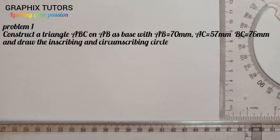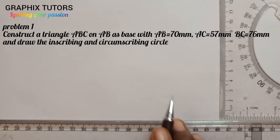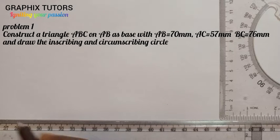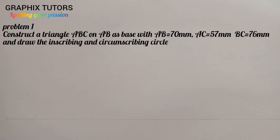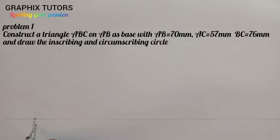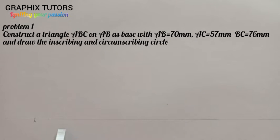The first thing we have to do is to draw the triangle. I'm going to draw a horizontal line — a faint line. I'm going to pick a point A, and I'm going to measure line 70mm because in the question we are told that AB is 70mm.